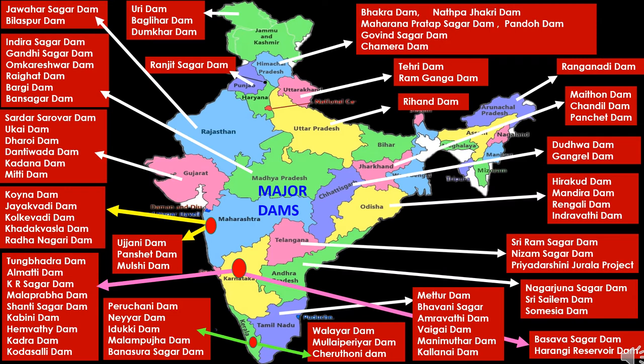In Arunachal Pradesh, Ranganadi Dam is built on the Ranganadi River. In Jharkhand, first is Maithon Dam, built on the Barakar River in Dhanbad. Second is Chandil Dam, built on the Subarnarekha River in Seraikela Kharsawan district. Third is Panchet Dam, constructed on the Damodar River in Dhanbad.